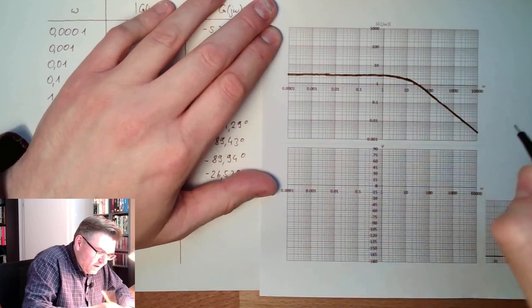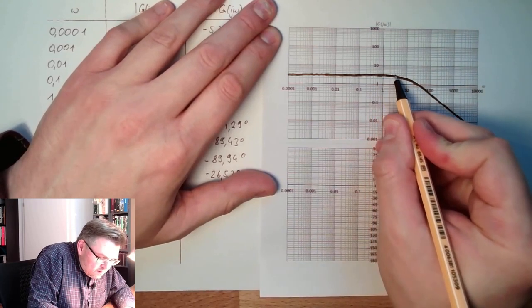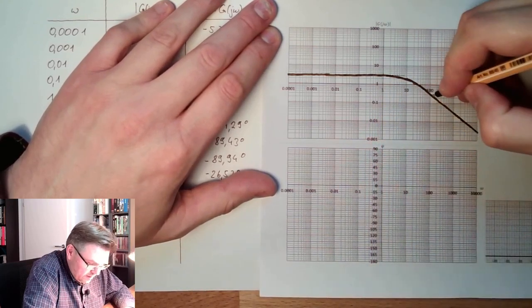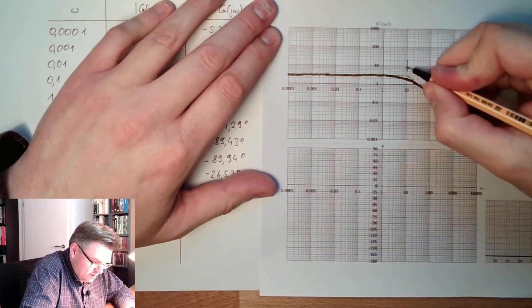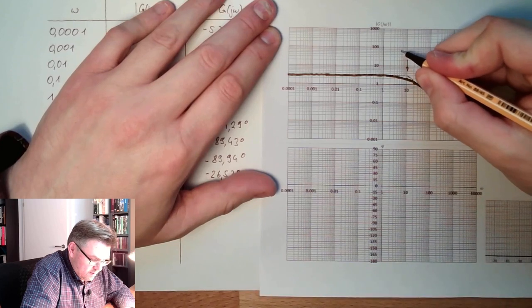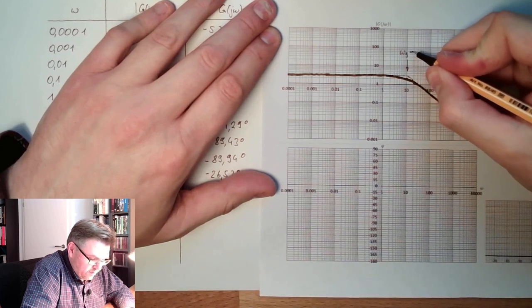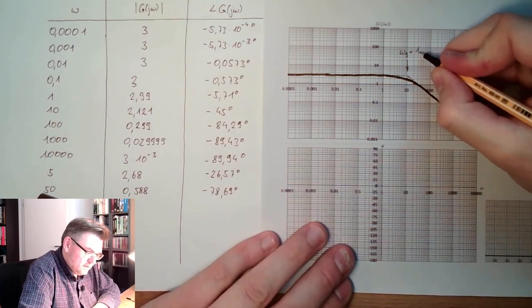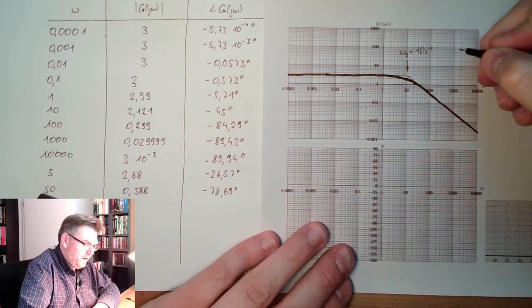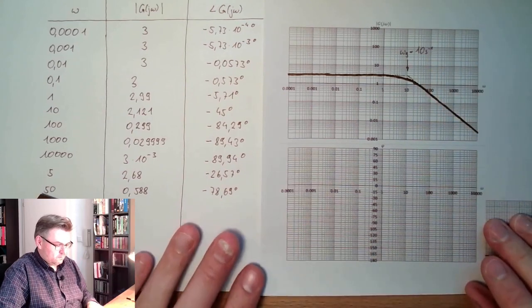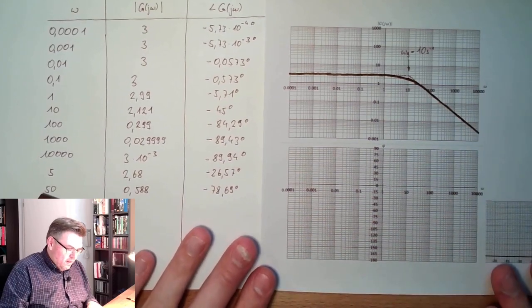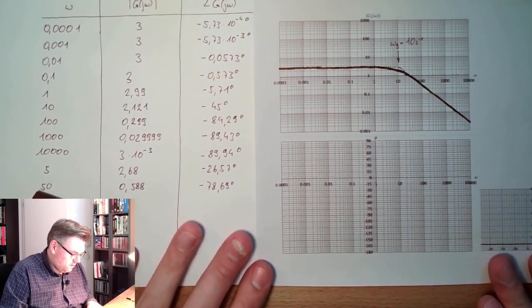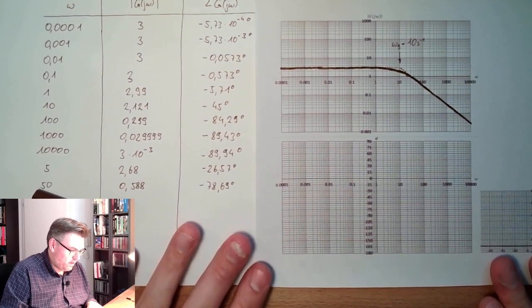If I'm extending this here and extending this here, I will meet at exactly the characteristic frequency, and this is 10 seconds raised by the power of minus 1. This was the PT1 element. Let's also draw the argument.